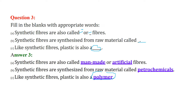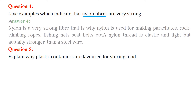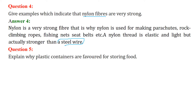Next: give examples which indicate that nylon fibers are very strong. Nylon fibers are used in various fields, especially where life-threatening loads are involved. Nylon is actually stronger than steel wire, making it a very strong fiber. That is why nylon is used for making parachutes, rock climbing ropes, fishing nets, and seat belts. Since nylon is elastic and light, unlike steel wire, it is preferred in these applications.